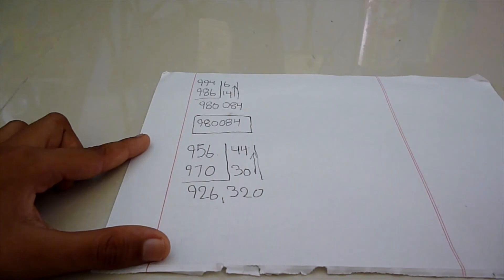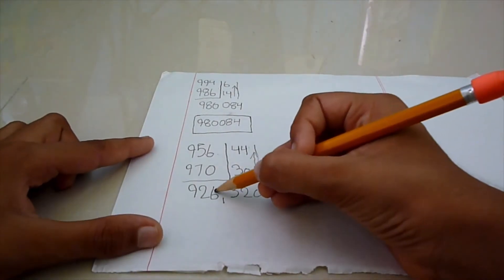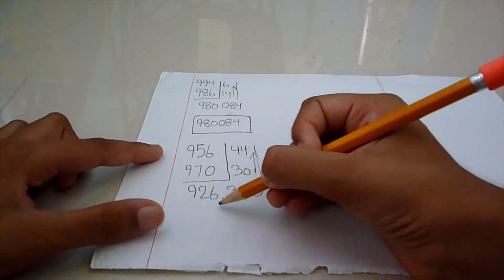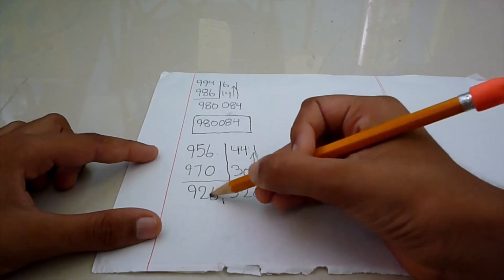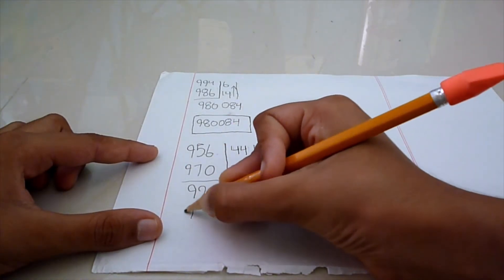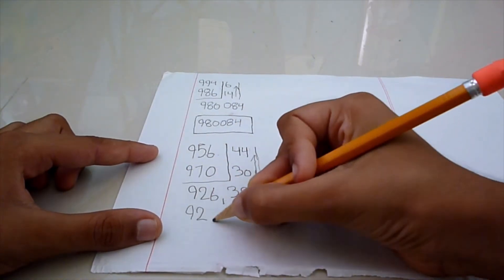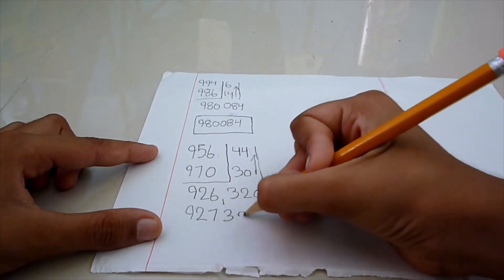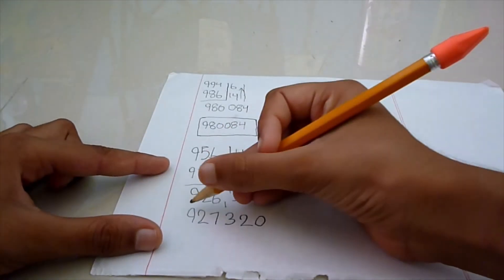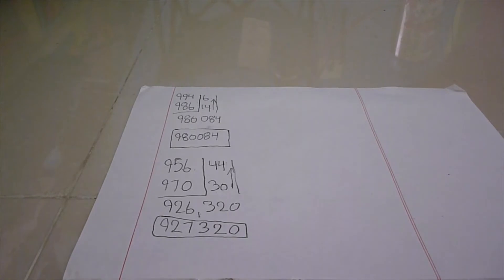Okay. Now, since there is 6 here, we can just directly add 1 to 6, just carry it over. So, the answer is 927320.